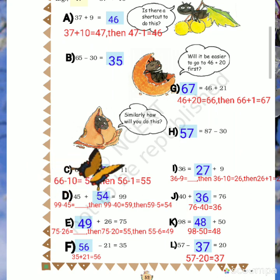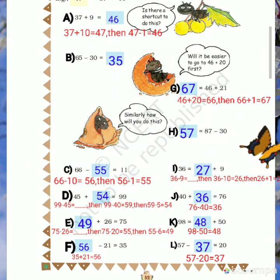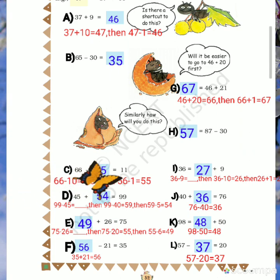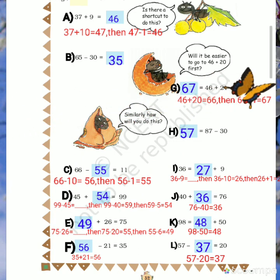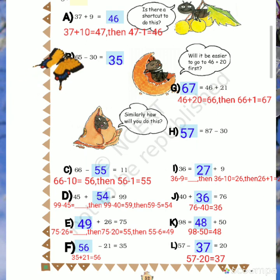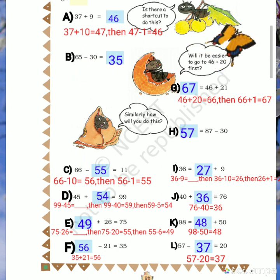E: dash plus 26 equals 75. How much do you add to 26 to get 75? Here also, subtract 26 from 75. First subtract 20 from 75, and after that subtract 6 more.